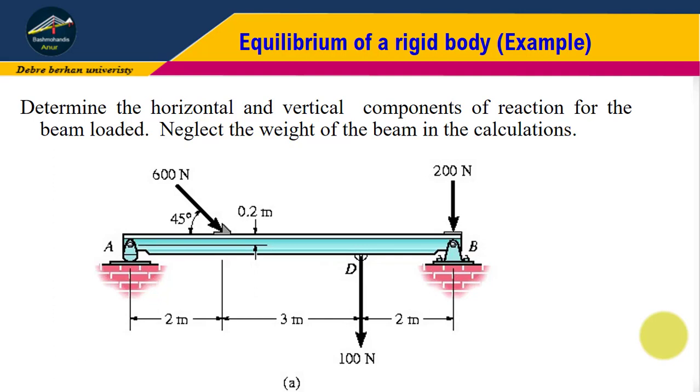Let me read the question: determine the horizontal and vertical components of reaction for the beam loaded. Neglect the weight of the beam in the calculations. As we can see here, this is a simply supported beam. Point A is a roller support, it has only one vertical reaction. Point B is a pin support, it has one vertical and one horizontal reaction.